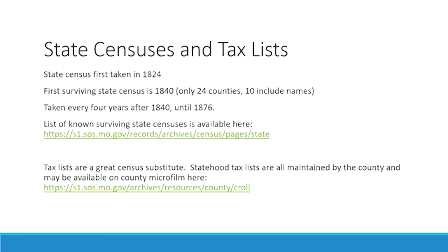We hope we might find a few more out there every once in a while. State censuses were taken every four years after 1840 until 1876, at which point the General Assembly decided to accept the federal census taken every 10 years and not spend time or money on a state census. There is a list of known surviving state censuses on our state censuses webpage. There are no state tax lists maintained by the Missouri State Archives — they are all maintained by the county and available on our county microfilm finding aids, which we are actively updating multiple times every year.